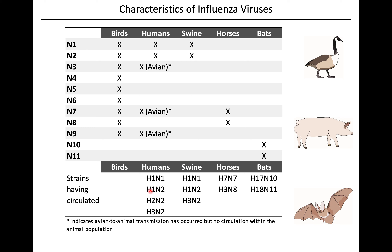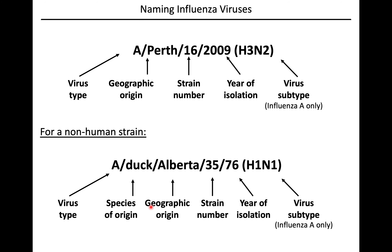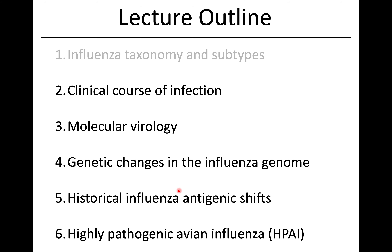You always see these strain designations referring to which combination of H and N proteins you find in that particular flu virus. There are internationally accepted naming conventions: the type (A, B, or C), where it originated - this one from Perth, Australia - a strain number, the year it was isolated, and the subtype designation, like H3N2. For non-human influenzas, a species of origin is also included between the virus type and the place of origin. If you have that name, you know quite a bit about that virus.